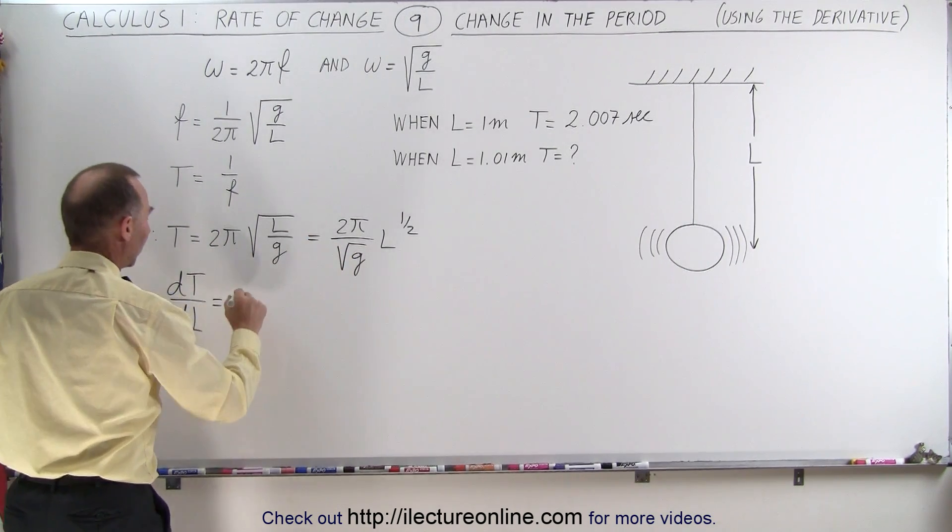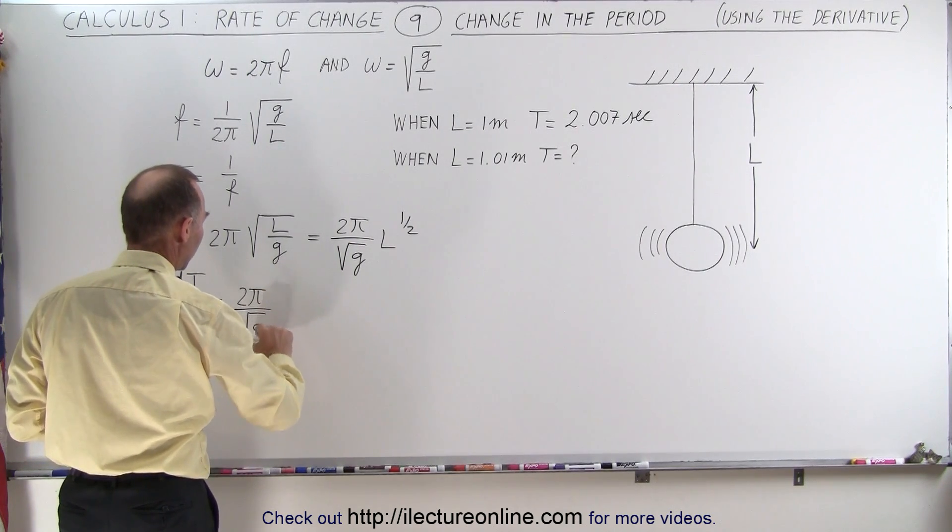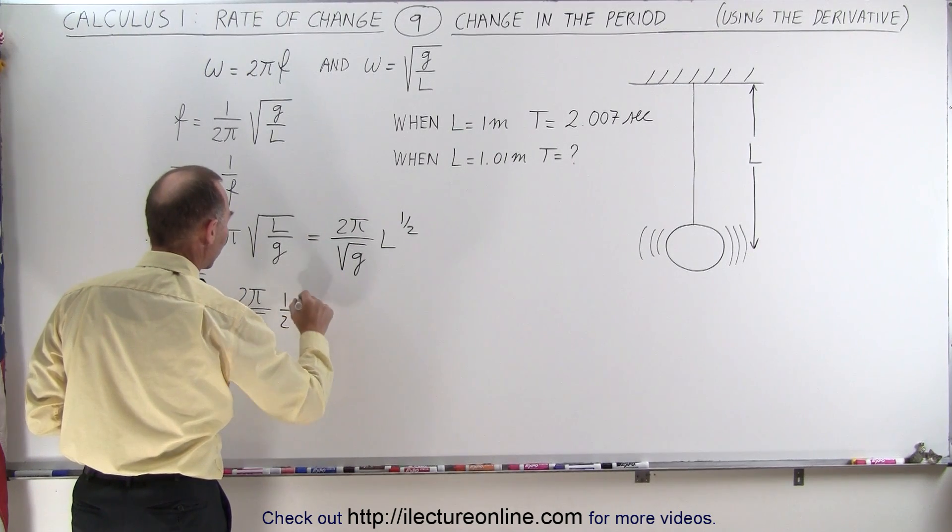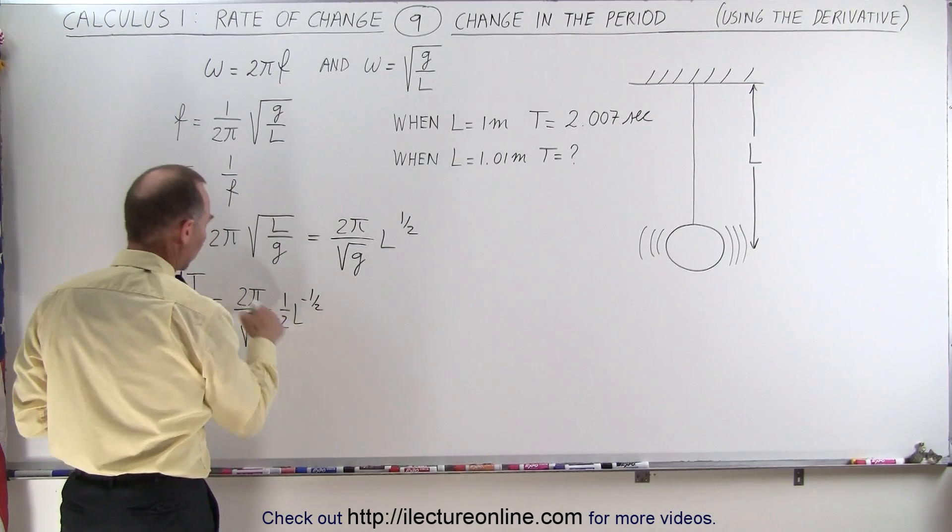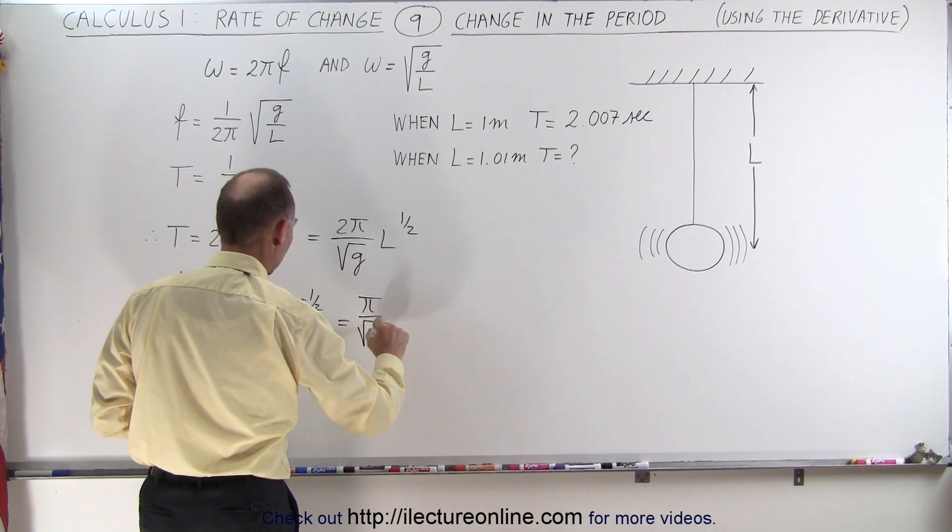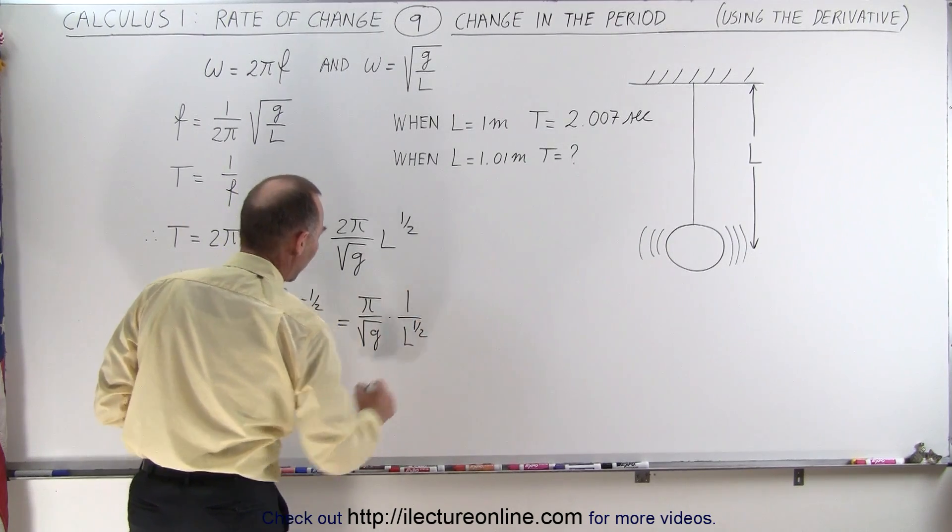So it's simply the derivative of this. So we take our constant 2π divided by the square root of g, and then we take the derivative of this, which is 1/2 L to the minus 1/2 power. The 2's cancel out here. So this gives us π divided by the square root of g times 1 over L to the 1/2 power.